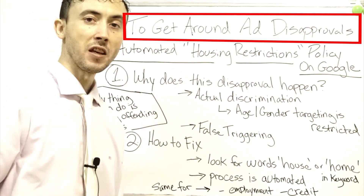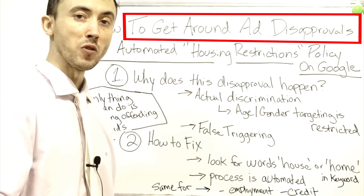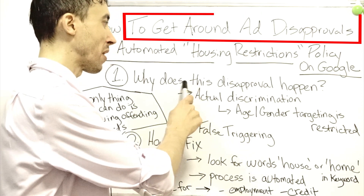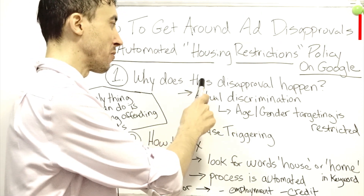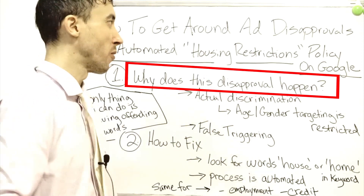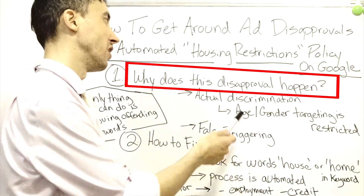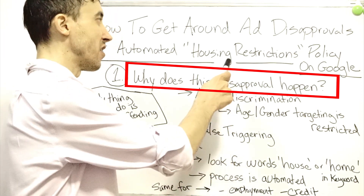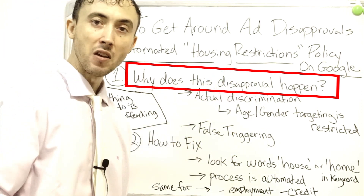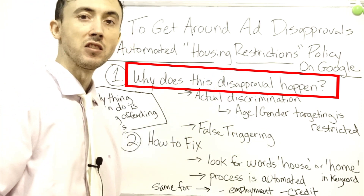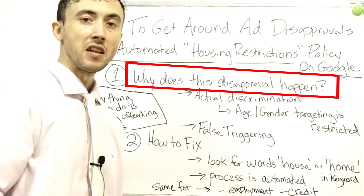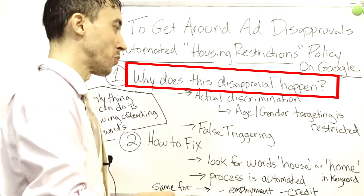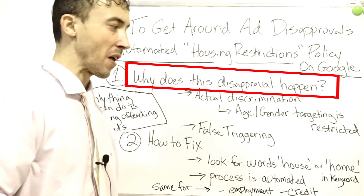I have a small list of things here that you should know about this violation if you have it or run into it and don't know what to do. The first thing on my list: Google did update their policy. You cannot restrict on gender and age when you're going to put up rental ads in the real estate space, specifically within that category.